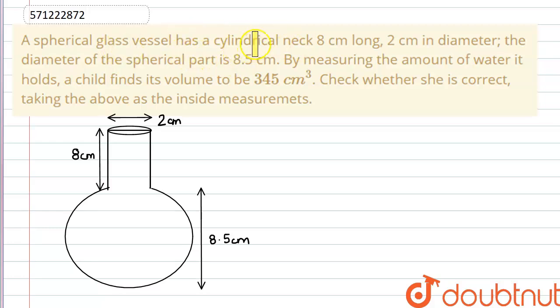Hello everyone, the question is a spherical glass vessel has a cylindrical neck that is 8 cm long and 2 cm in diameter.